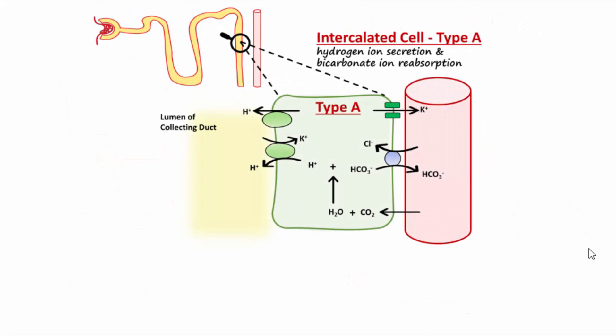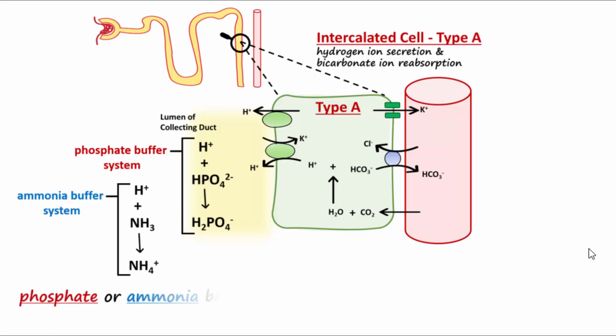It is important that hydrogen ions secreted by the type A cells are buffered in the urine. This is accomplished by phosphate or ammonia buffer systems. They get rid of some of the hydrogen ions to prevent the pH of the urine from becoming too low, which could damage the cells of the kidney.